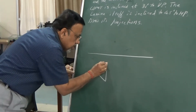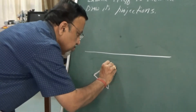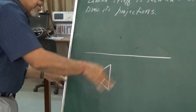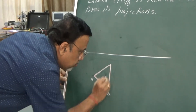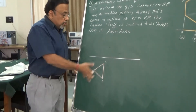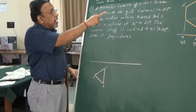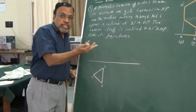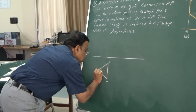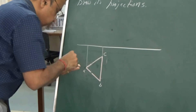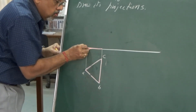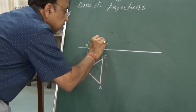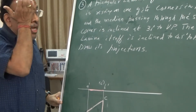Name the vertices in the anti-clockwise direction: A, B, and C. Now for the corresponding front view — since I want a corner in HP, I initially assume the entire lamina rests on HP itself, so it lies on the XY line. Draw projectors to get the front view points: A-dash, B-dash, and C-dash.